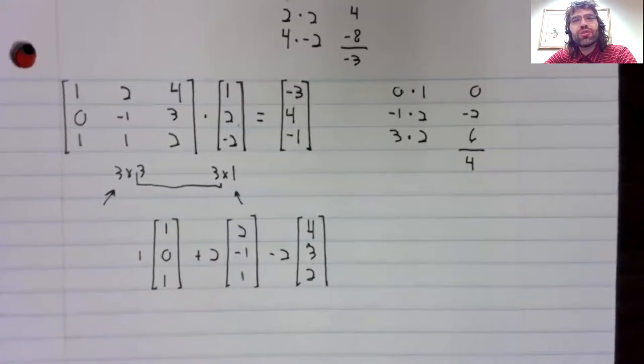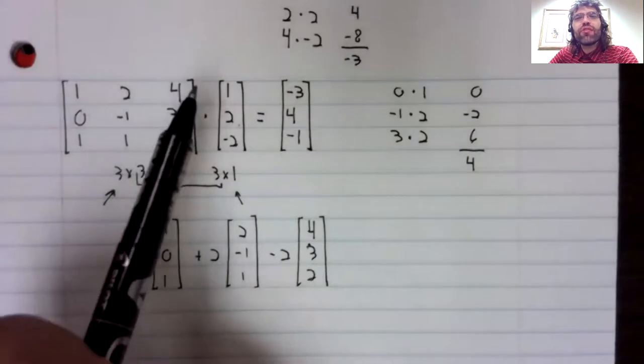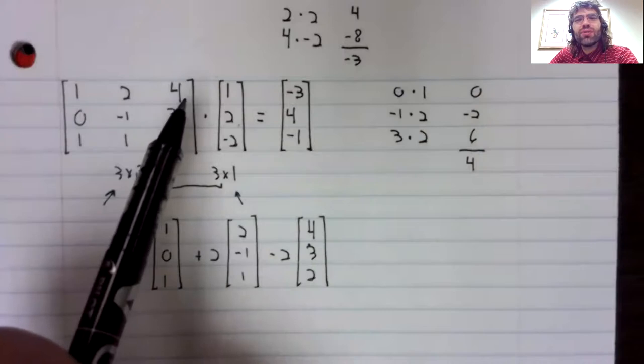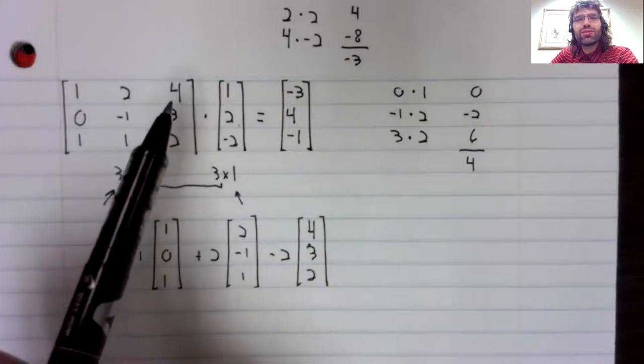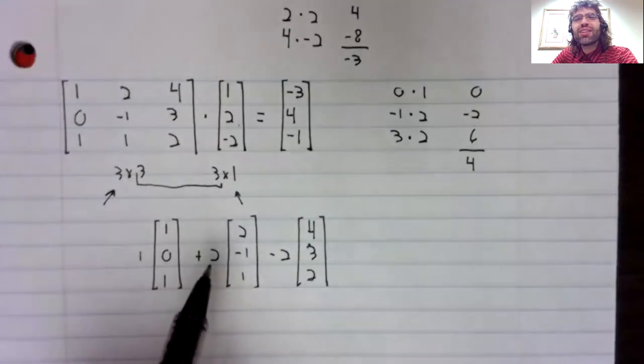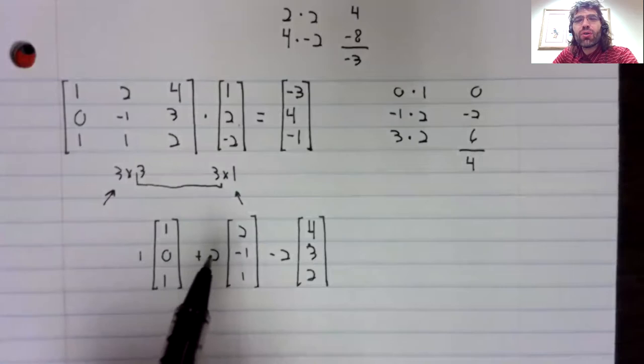When I first learned linear algebra, this was how multiplication was defined. It wasn't until I was in graduate school that I realized what multiplication is actually doing: that it's linear combinations of columns.